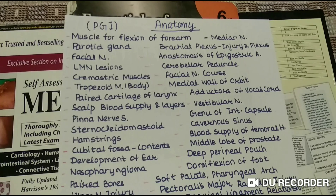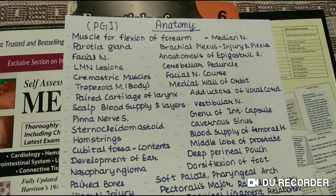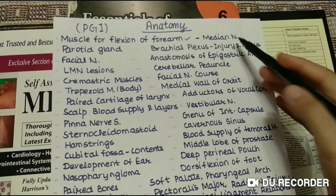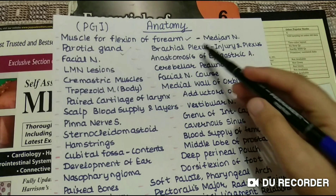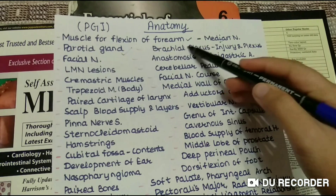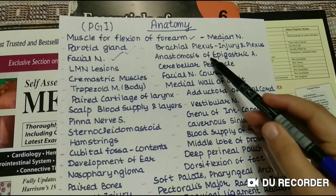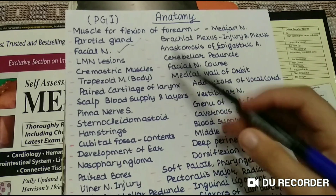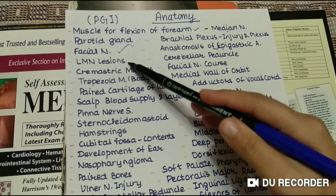Topic list for anatomy. First topic is muscles for flexion of forearm, median nerve, parotid gland, brachial plexus injury and plexus, facial nerve, anastomosis of epigastric artery. Next topic is lower motor neuron lesions.